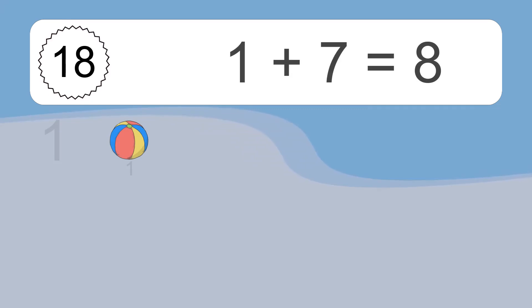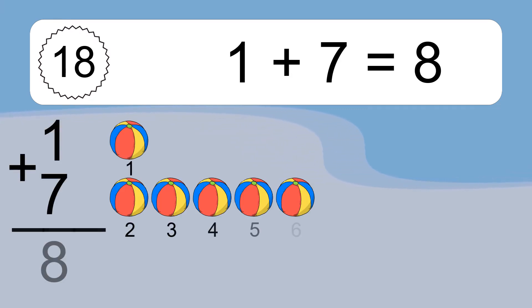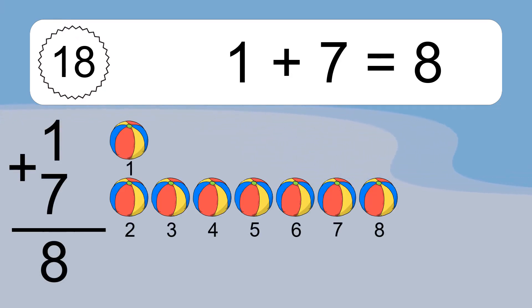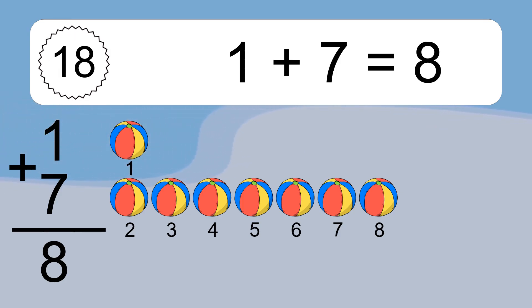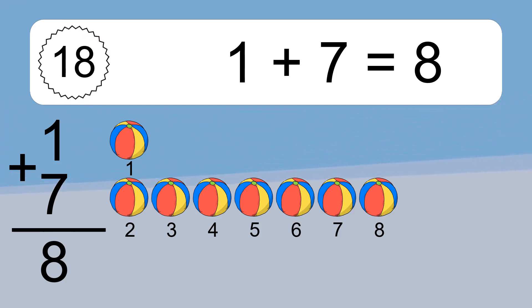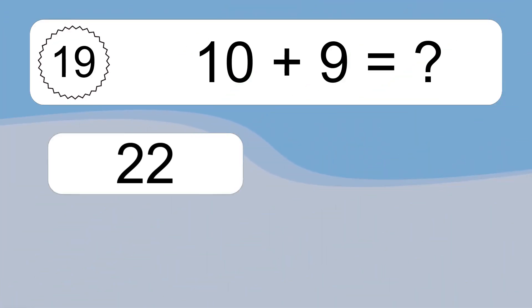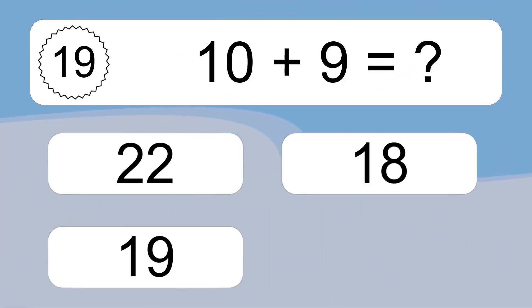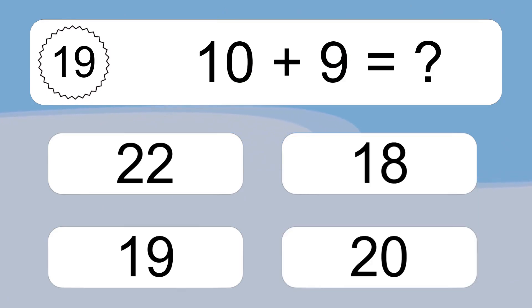2 plus 5 equals what? Two plus five equals seven. Let's count it: one, two, three, four, five, six, seven. 1 plus 7 equals what? One plus seven equals eight. Let's count it: one, two, three, four, five, six, seven, eight.